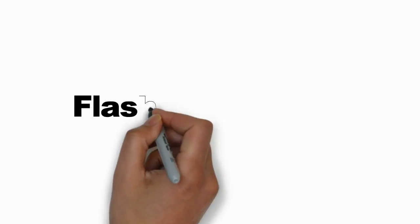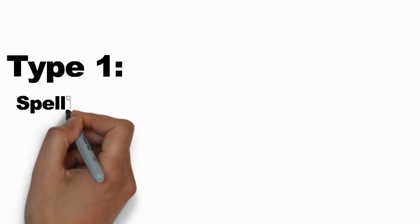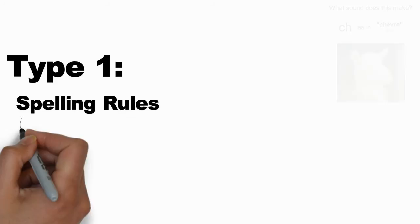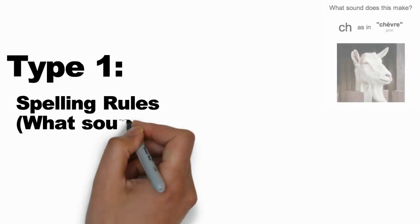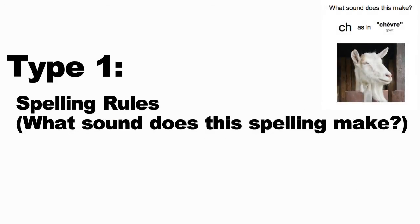Whenever you open your trainer, you'll encounter six types of flashcards. The first type will teach you spelling rules. For example: 'CH as in French CHEVRE — C-H-E-V-R-E — sounds like what?' Your job is to remember the sound of that particular spelling, in this case CH as in CHEVRE.